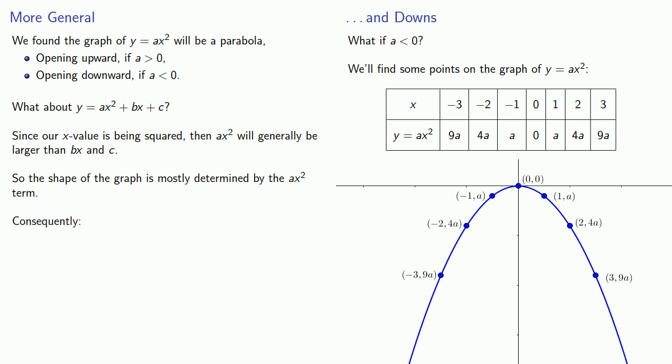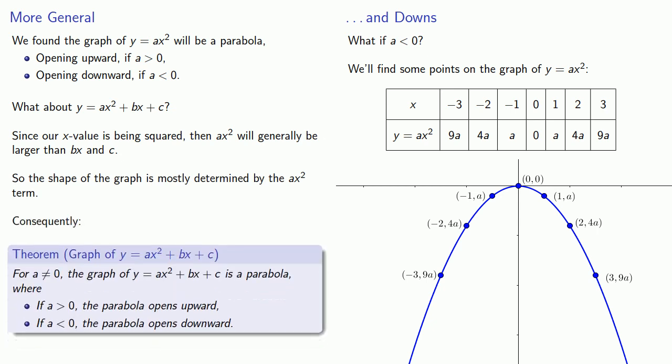Consequently, for a not equal to zero, the graph of y equals ax squared plus bx plus c is a parabola where if a is greater than zero, the parabola opens upward, and if a is less than zero, the parabola opens downward.